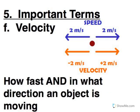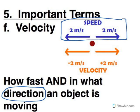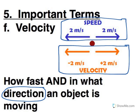What distinguishes velocity from speed is that velocity also includes the direction of motion. So in the illustration here, speed doesn't care which way you're going. No matter which way you're going, if you're going two meters per second, it's two meters per second.